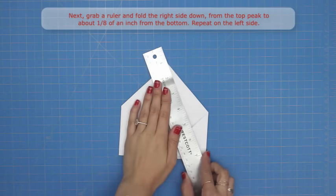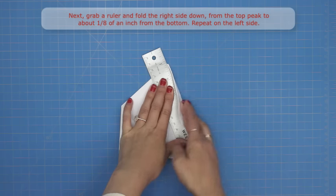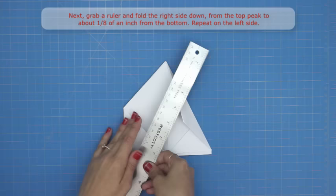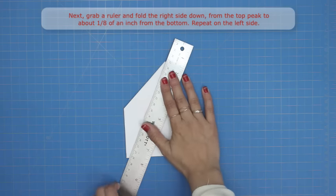Next, grab a ruler and fold the right side down from the top peak to about 1/8 of an inch from the bottom. Repeat on the left side.